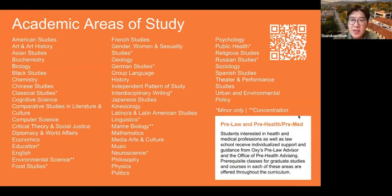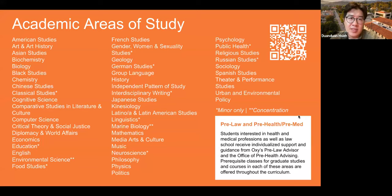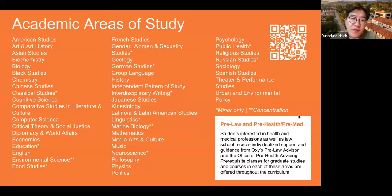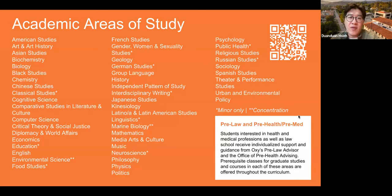Here are our academic areas of study — feel free to scan the QR code on screen to learn more. Our top major right now is economics, and our top five include computer science, psychology, biology, English, and diplomacy and world affairs, which is our international relations major. Not majors you'd typically associate with a small liberal arts college, but we have a wide range of academic areas for students to explore.